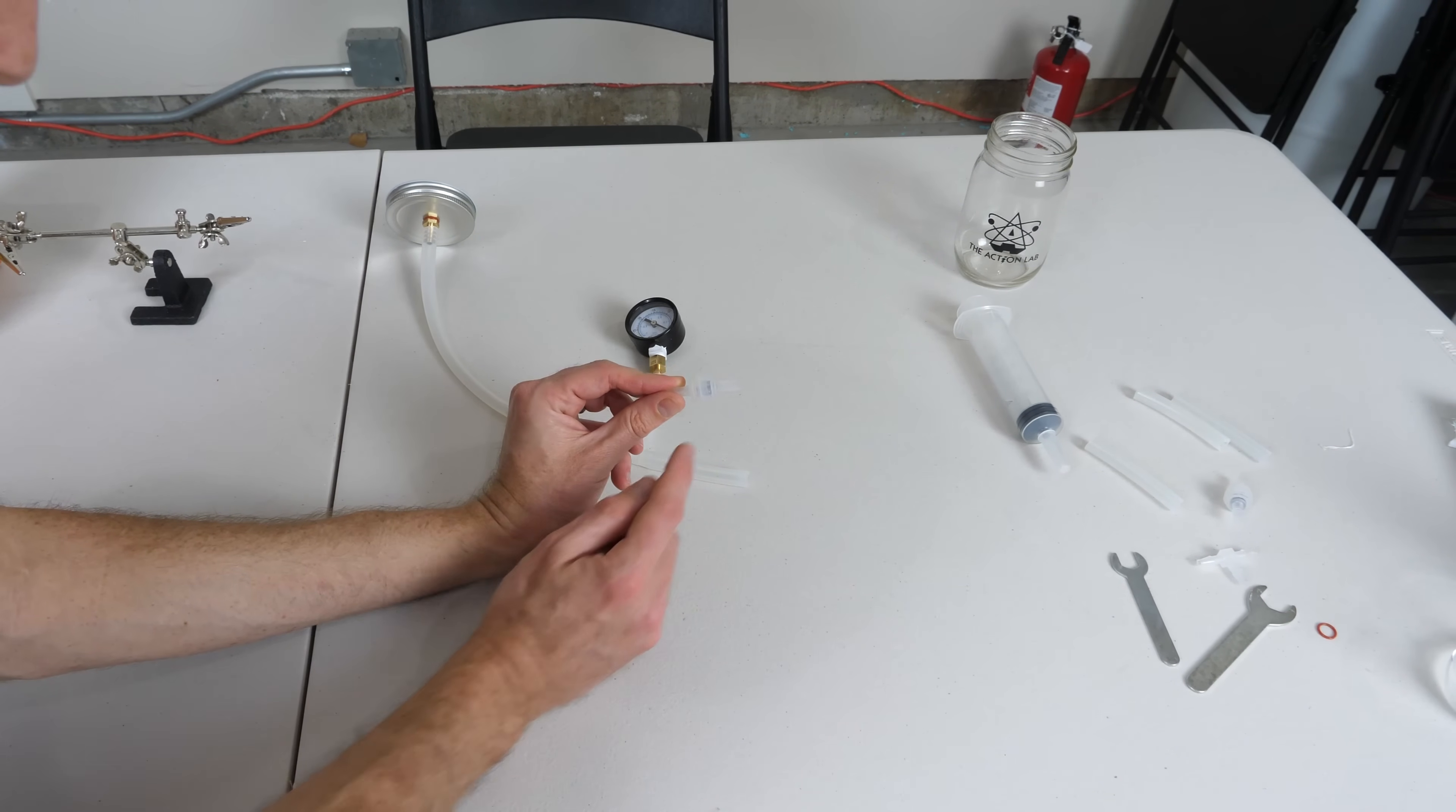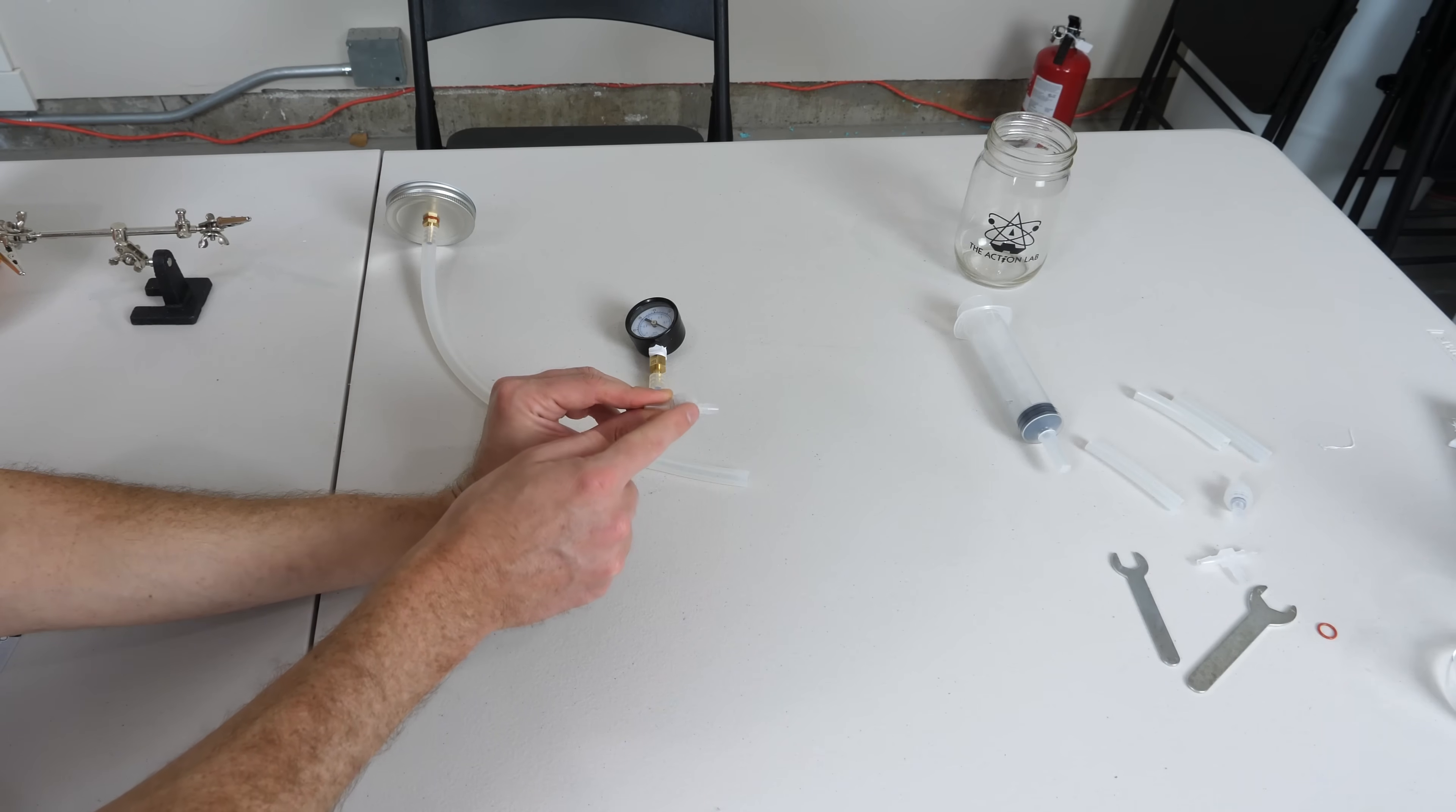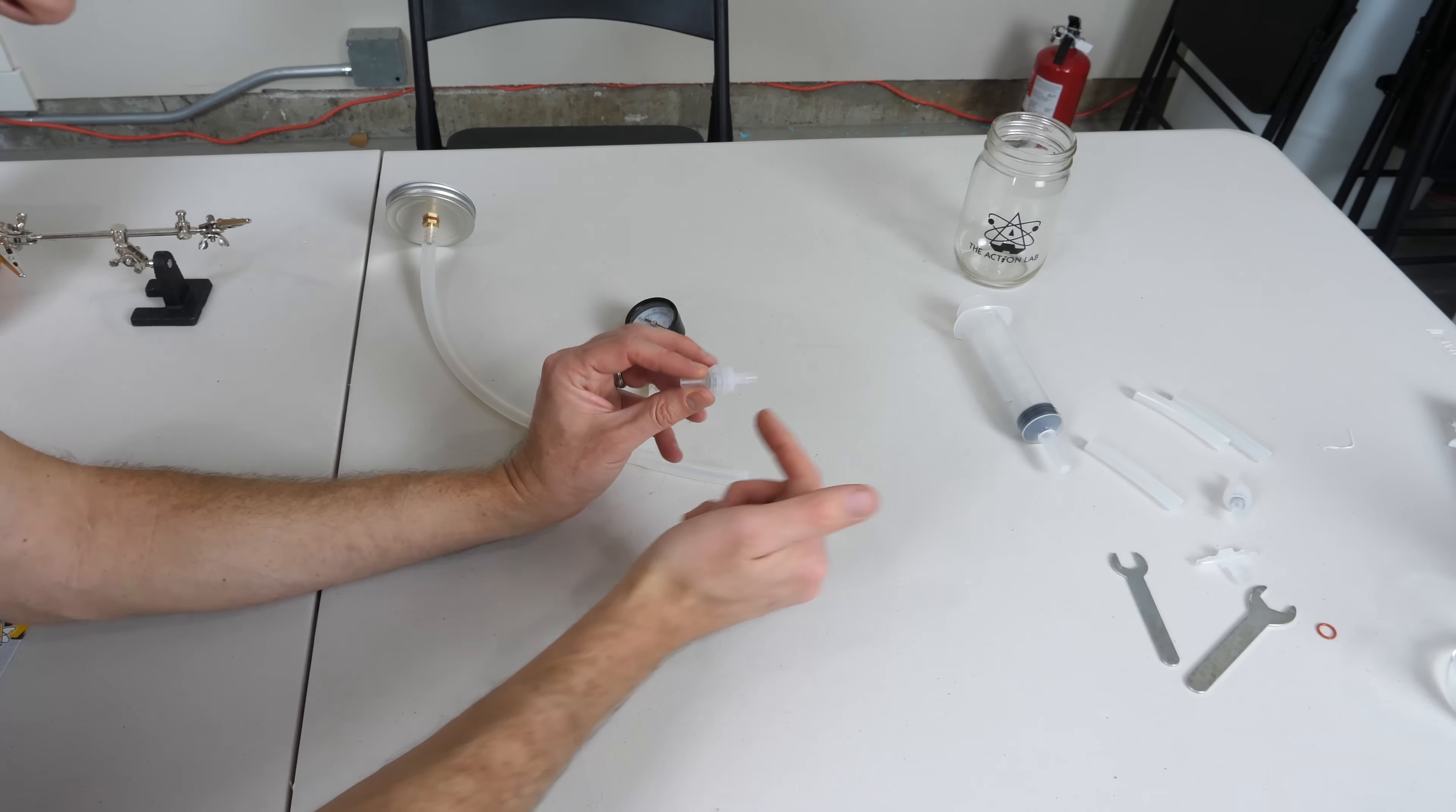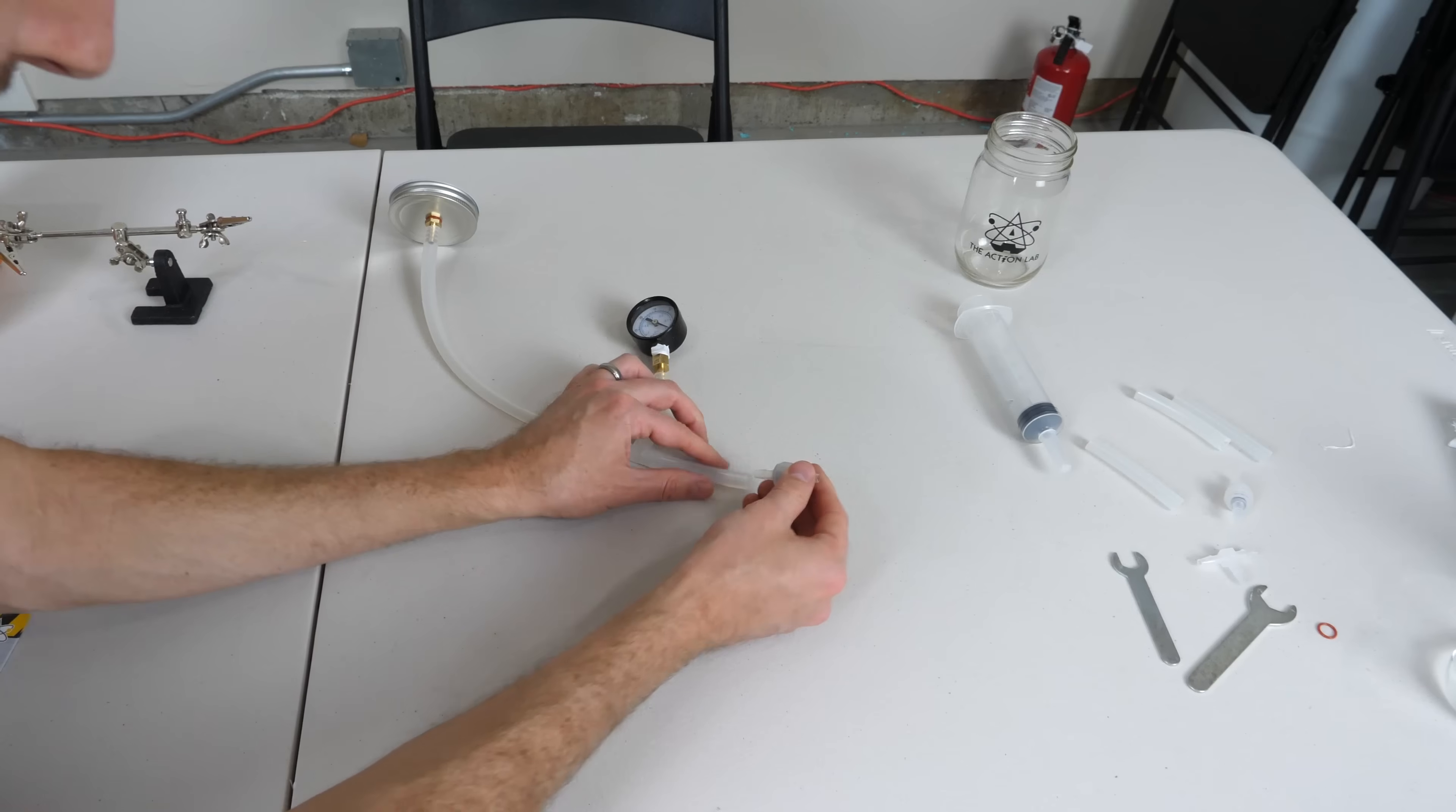And then comes your one-way valve. On these, there's a little arrow that's kind of hard to see. It's engraved in here, but this shows the direction of flow. If you can't find the arrow, just suck or blow through it and you can see which direction the air is going. You want the air to go away from your vacuum chamber, so you want the arrow pointing this way.